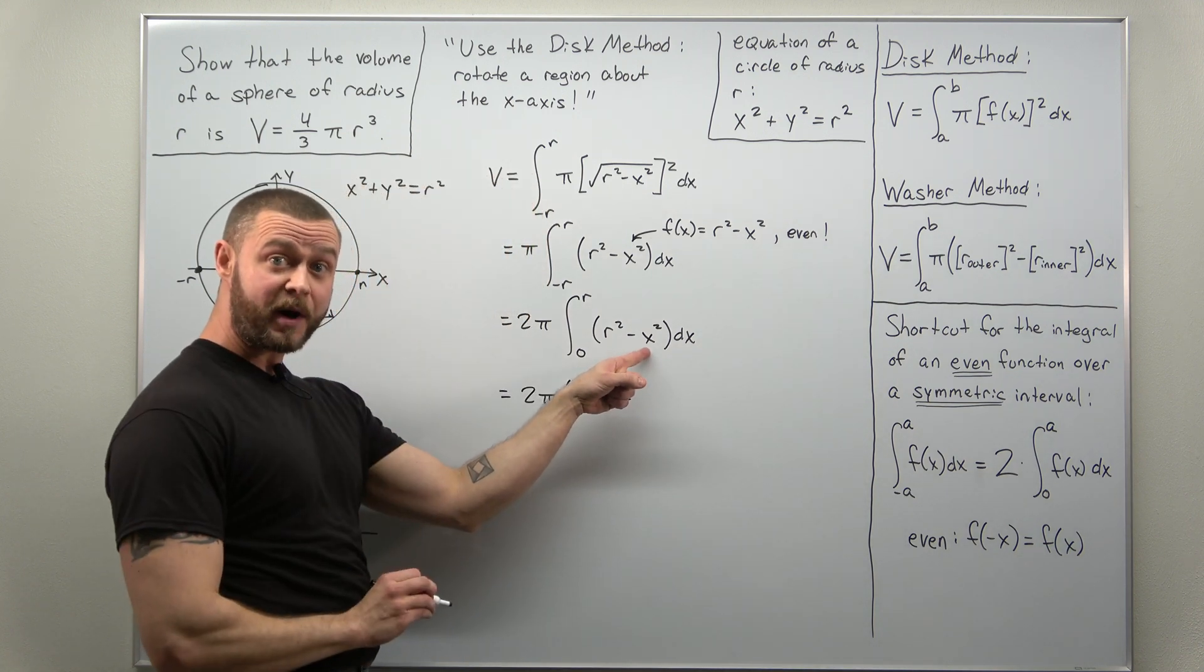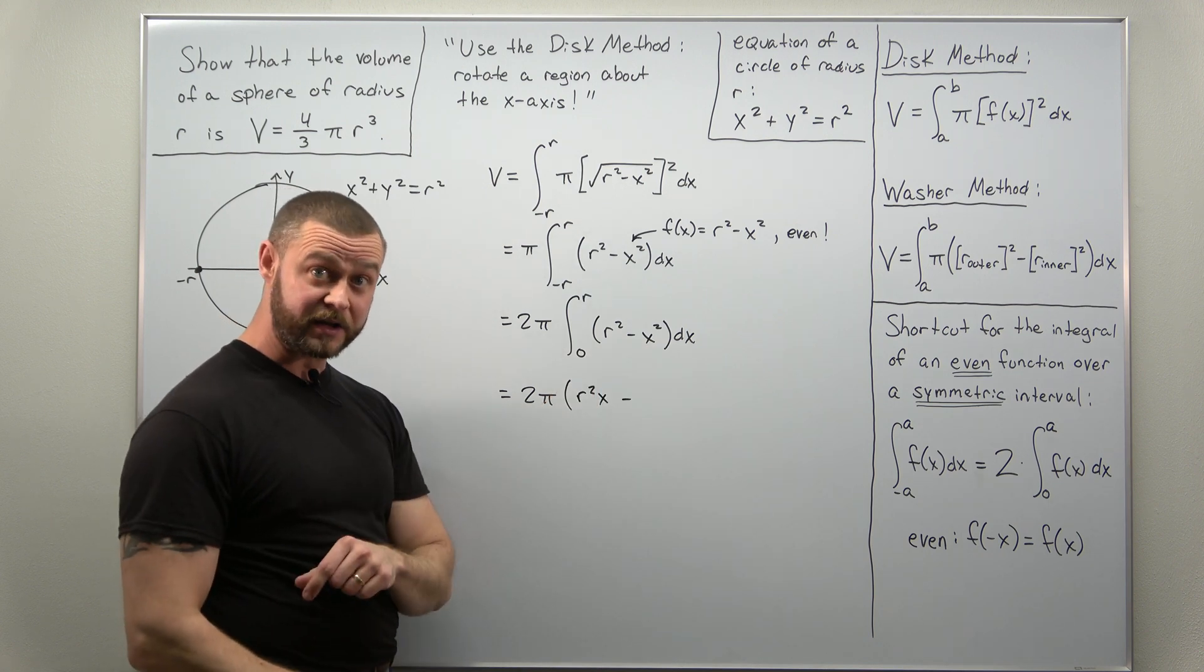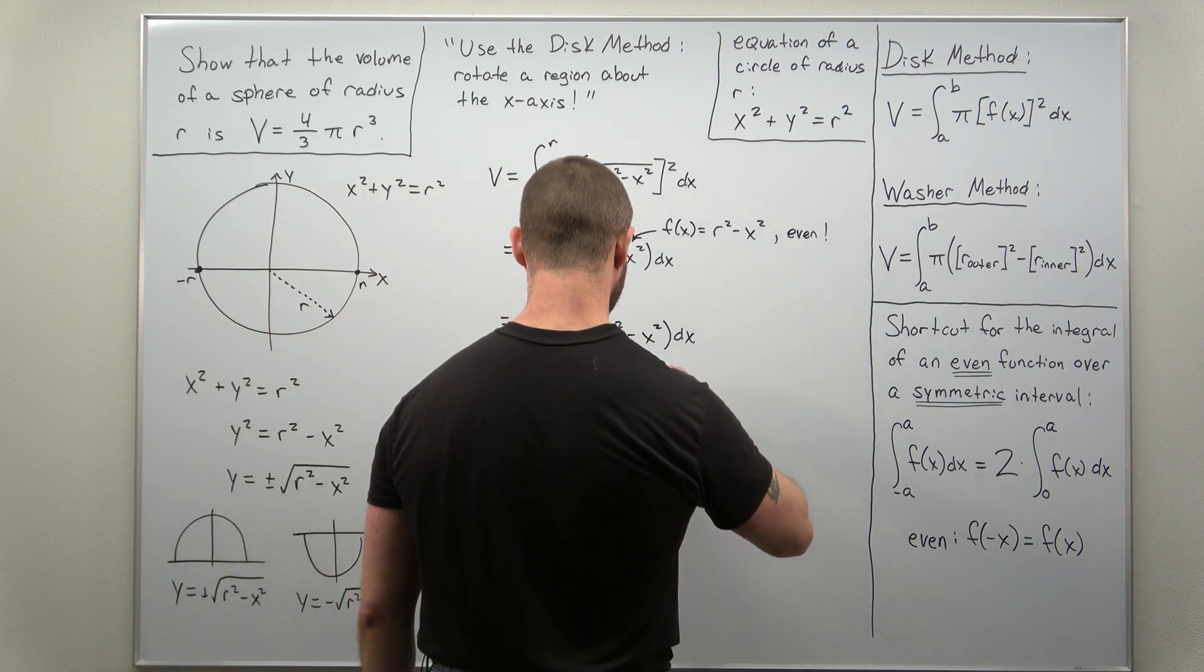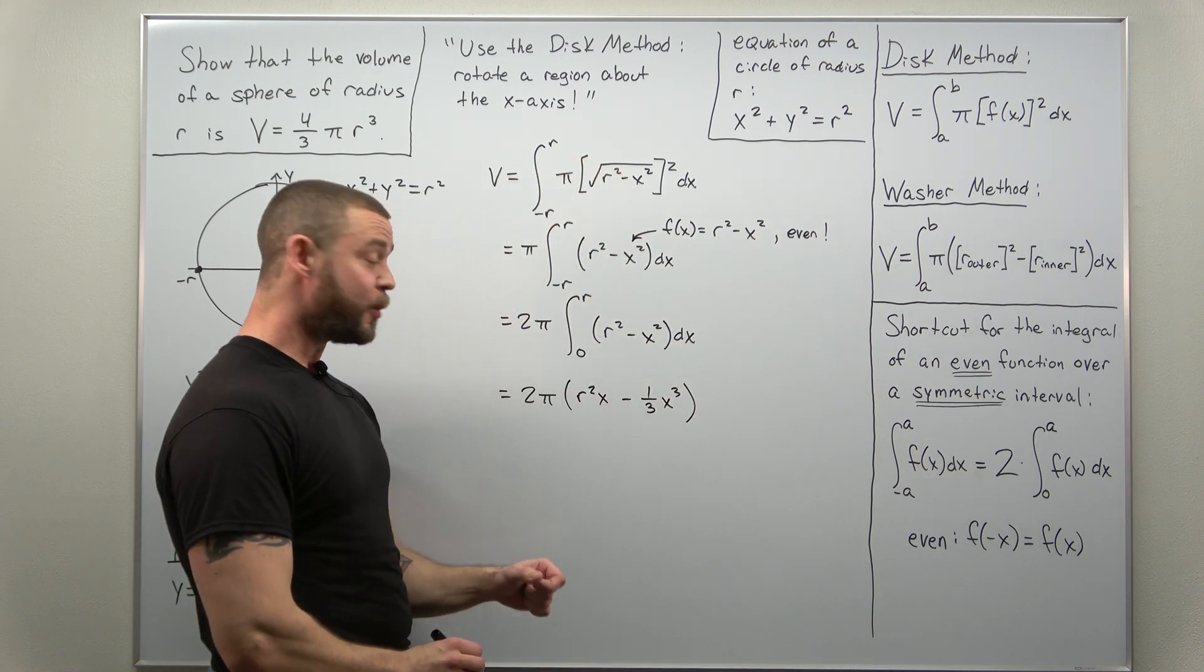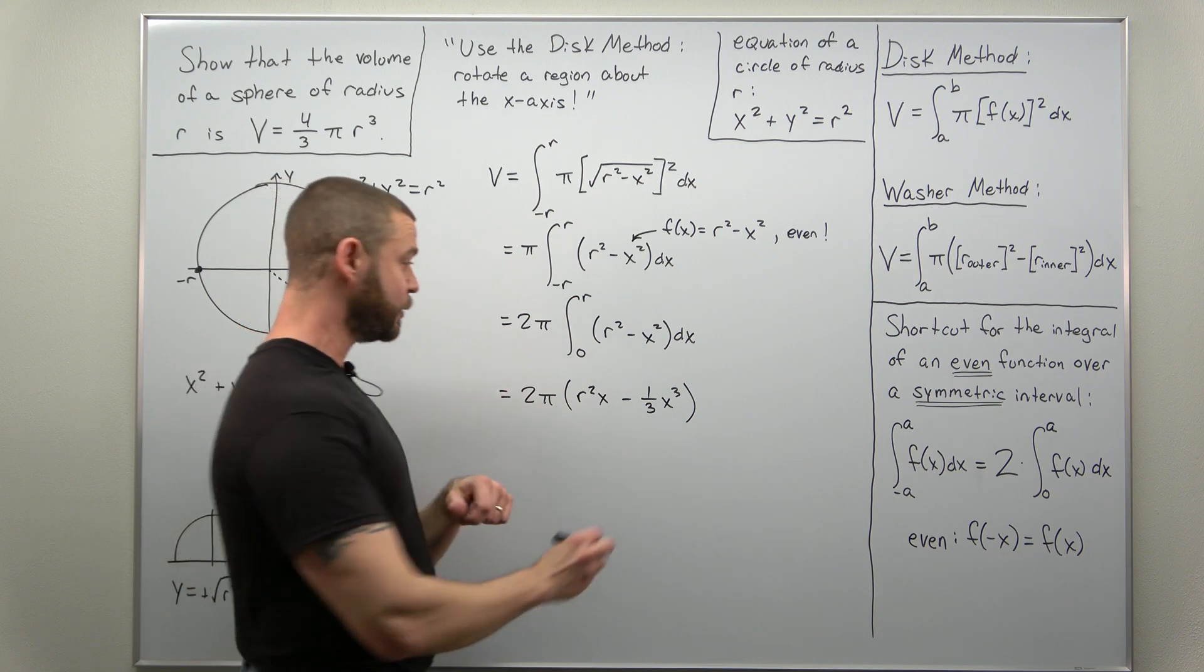And now you can apply the power rule to integrating x squared. That correctly gives you one-third x cubed and now we evaluate that from x equals zero to x equals r.